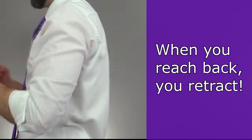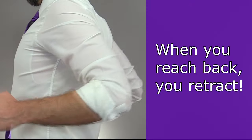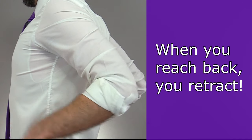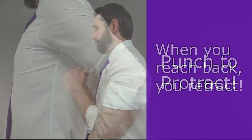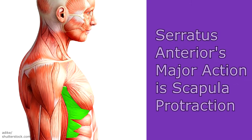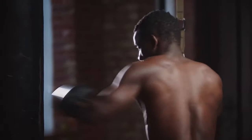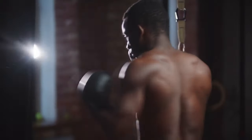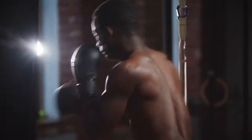Here's a really simple way to remember this movement: when you reach back you retract, and then you punch to protract. In fact, the serratus anterior muscles assist with this movement, and they even call this muscle the boxer's muscle for this very reason.